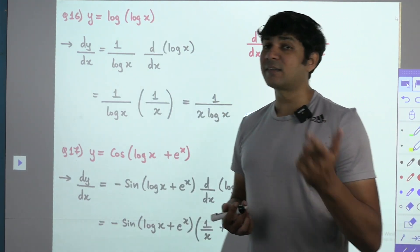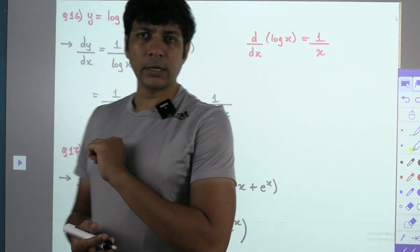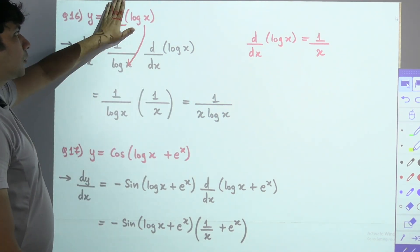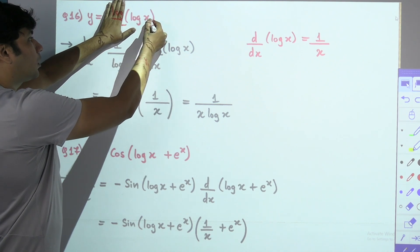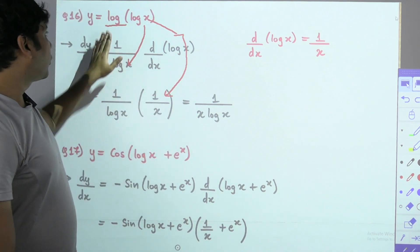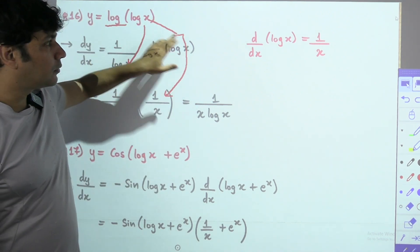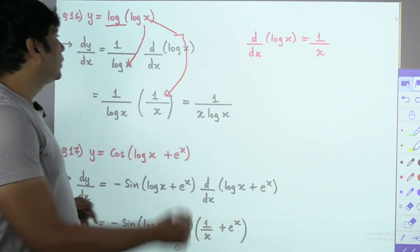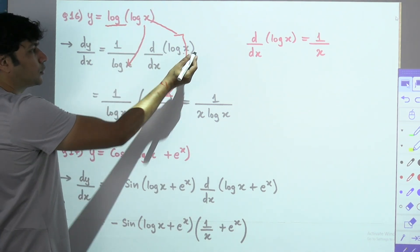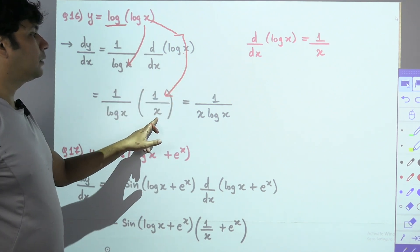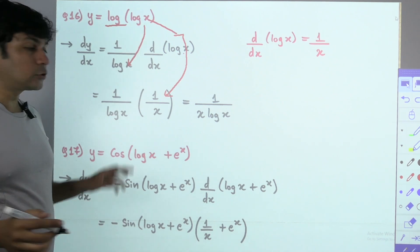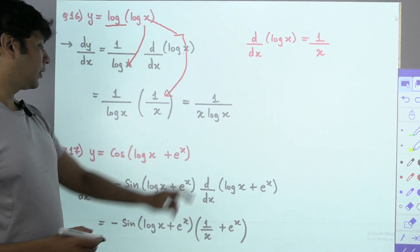Sixteenth question: y = log(log x). Log is an egoistic guy — whatever comes after log gets kicked to the denominator. So log(log x) gives 1/(log x), into differentiation of log x. Log x also gets kicked down, giving 1/x. Answer: 1 × 1 = 1 in numerator, and log x × x in denominator — that is 1/(x log x). Do not write (log x)².